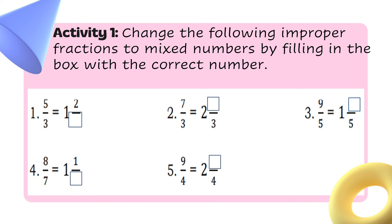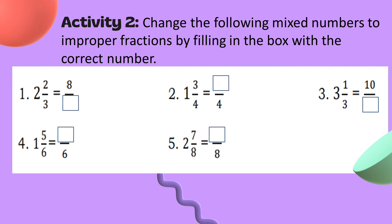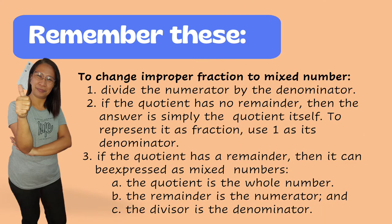Let us see if you already know how to change improper fractions to mixed numbers and mixed numbers to improper fractions. Activity number one: change the following improper fractions to mixed numbers by filling in the box with the correct number. Now let's go to activity number two: change the following mixed numbers to improper fractions by filling in the box with the correct number. Always remember: to rewrite an improper fraction as a mixed number, divide the numerator by the denominator; the quotient will be the whole number, the remainder will be the numerator, and the divisor will be its denominator.